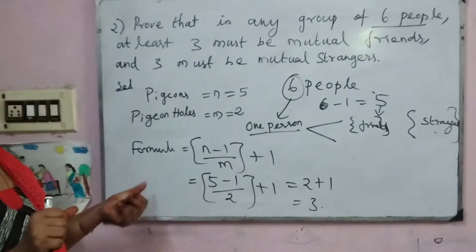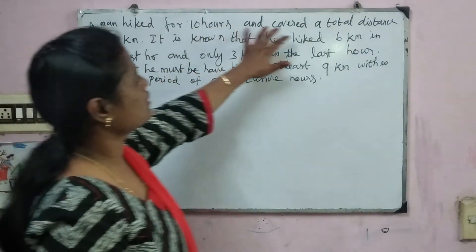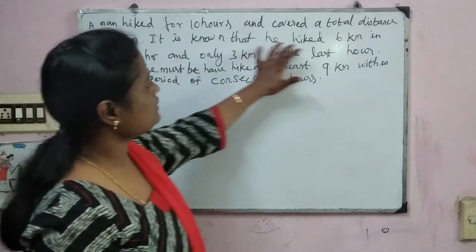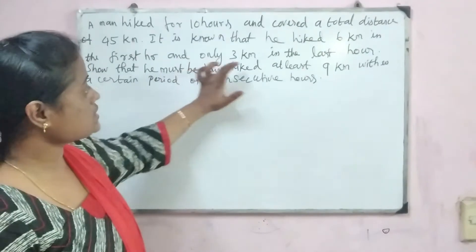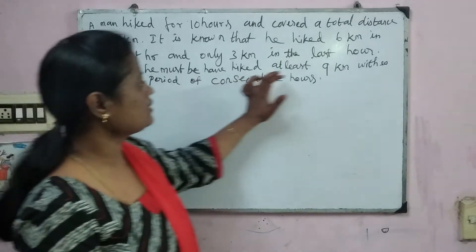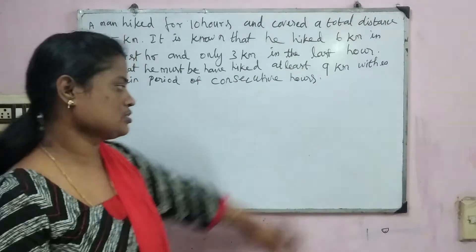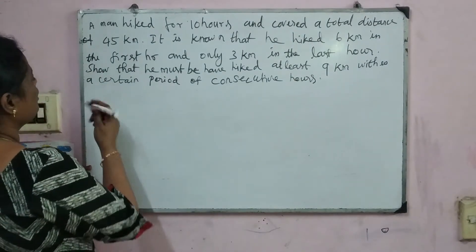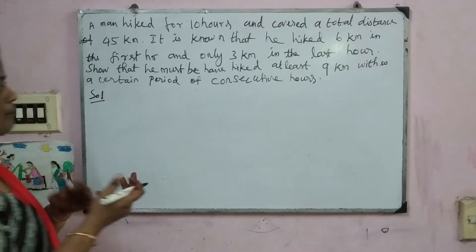Next problem: A man hiked for 10 hours and covered a total distance of 45 km. It is known that he hiked 6 km in the first hour and only 3 km in the last hour. Show that he must have hiked at least 9 km within a certain period of consecutive hours. Let us start the solution. I will give a tip using the number line method.